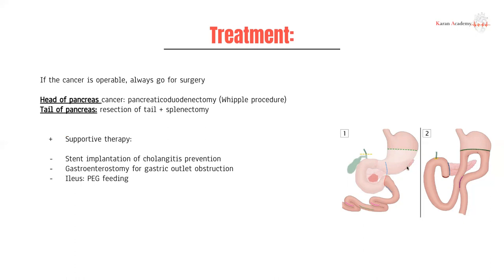If the cancer is localized to the tail, you can resect the tail and also resect the spleen. Other considerations include stent implantation for cholangitis prevention to prevent further blockages, a gastroenterostomy for gastric outlet obstruction if the tumor is pressing on the gastric opening, and PEG tube feeding if there's an ileus — often very important as these patients are malnourished and losing weight rapidly.